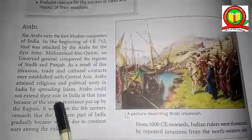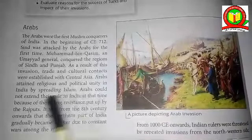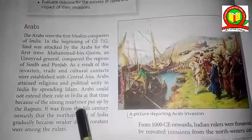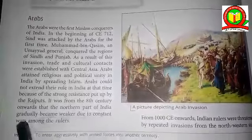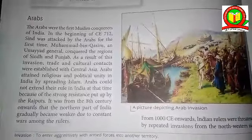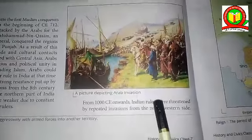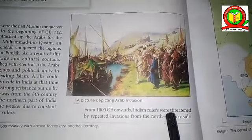Arabs could not extend their rule in India at the time because of the strong resistance put up by the Rajputs. It was from the 8th century onward that the northern part of India gradually became weaker due to constant wars among the rulers. This is a picture depicting the Arab invasion.